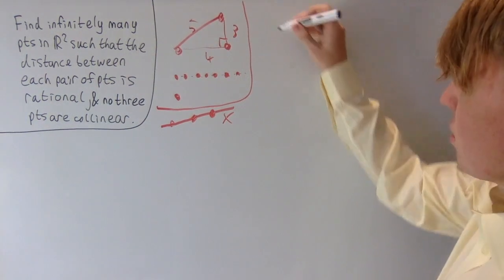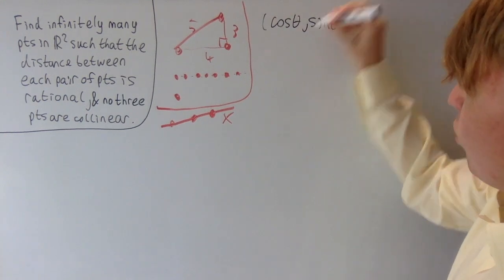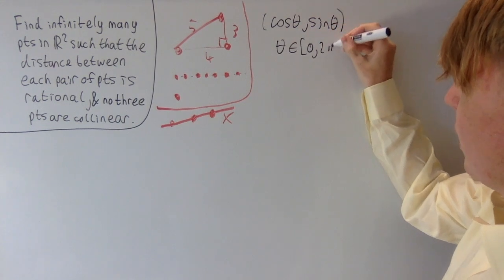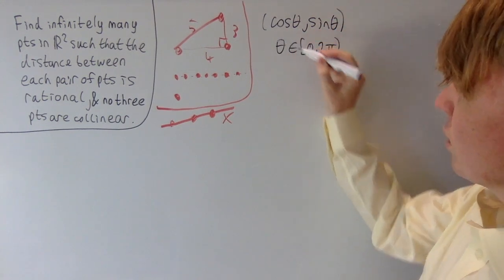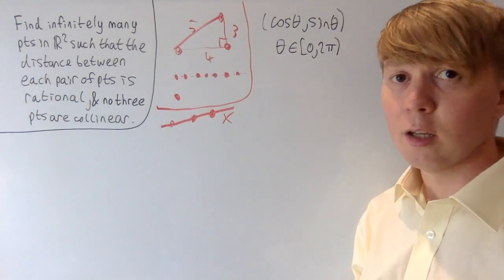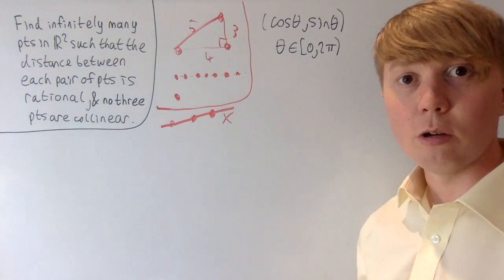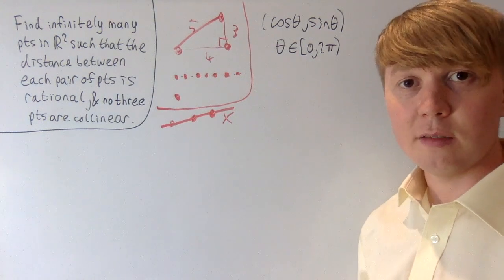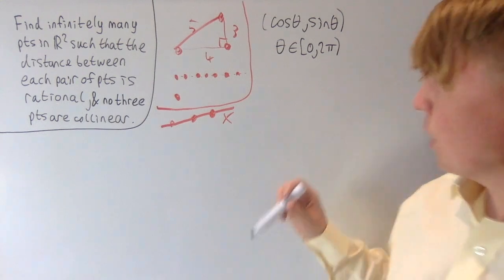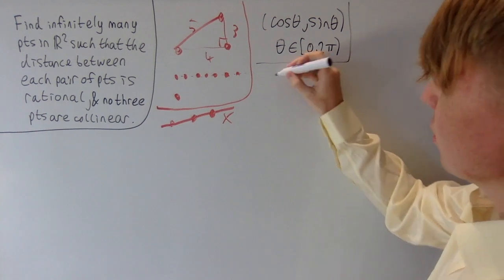If we take the unit circle, a general point on it is (cos θ, sin θ) where θ is between 0 and 2π. Because a circle can intersect a straight line at most 2 points, we'll never have 3 points on a circle which are collinear — so this satisfies our criteria. The next thing we need is a nice way of describing the distance between 2 points on the unit circle.